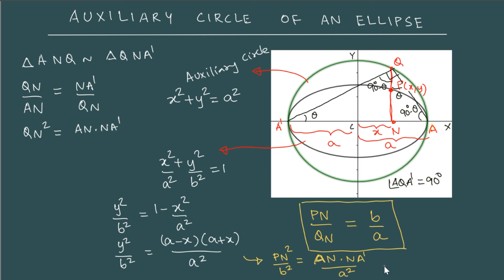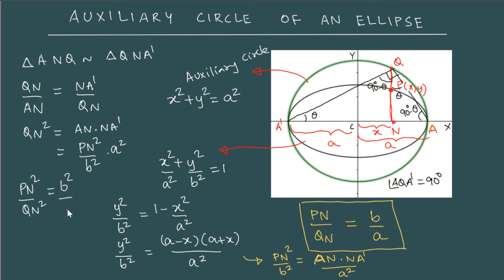We have AN · NA' = PN² / b² × a². And from here, if I take PN² / QN², I can write this as b² / a². Taking the square root on both sides, you get PN / QN = b / a. So this is a very important property which you should keep in mind.